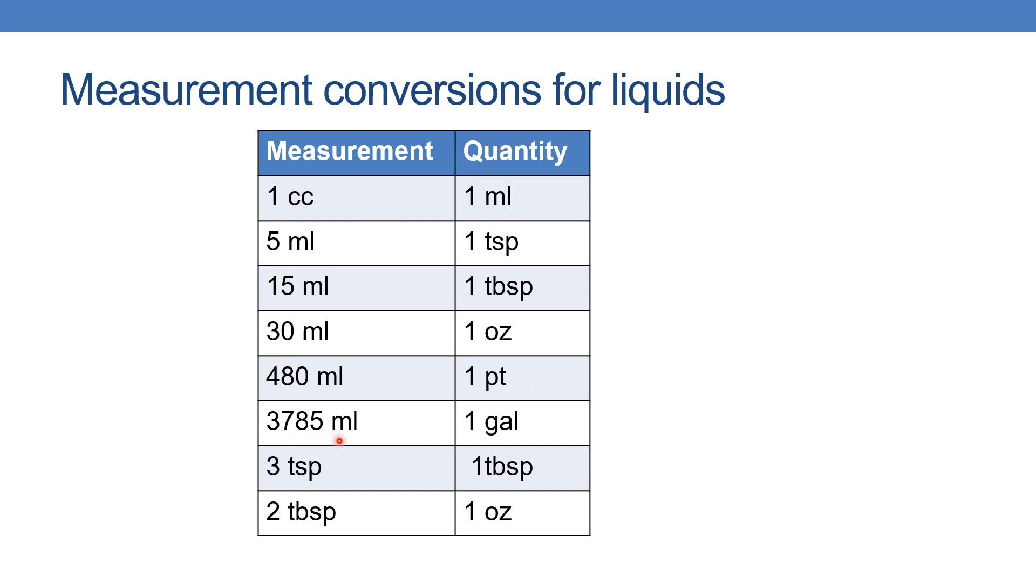3785 ml indicates 1 gallon. 3 teaspoons is equal to 1 tablespoon, and 2 tablespoons will be equal to 1 ounce.